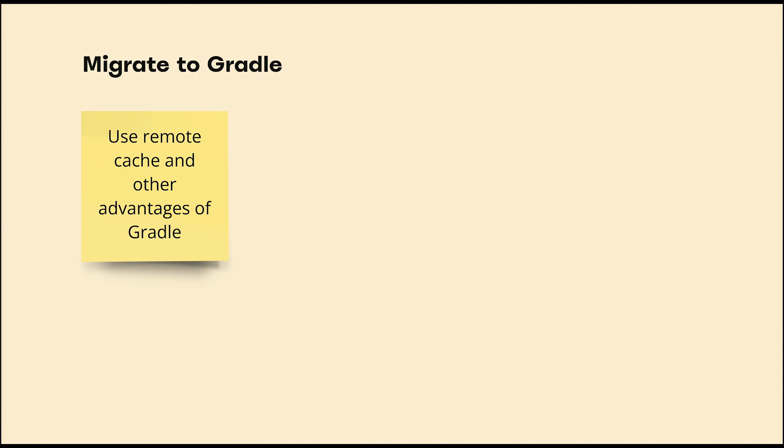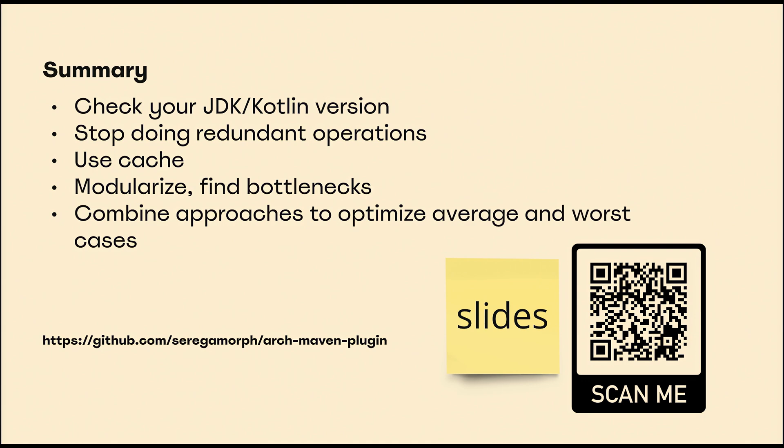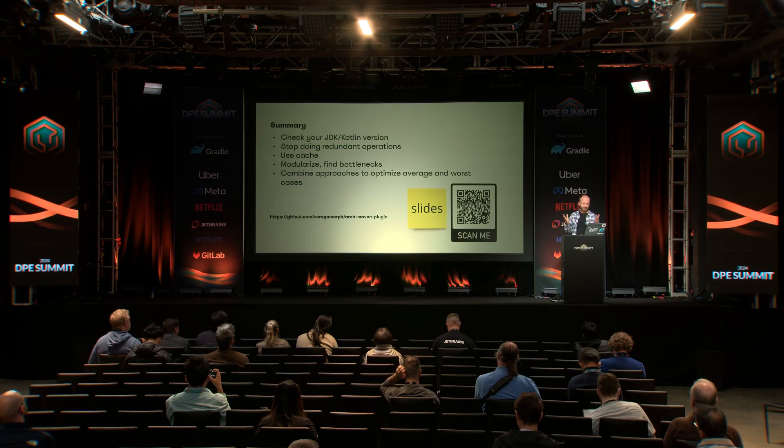By default, engineers can execute a plain command like mvn clean install -DskipTests and their builds will be fast. Finally, it could make sense to migrate to Gradle to use all its advantages, but keep in mind it's not only work for your developer productivity team — you need to do it atomically, covering pipelines and release cycles, and teach your engineers to use new tooling. In many cases it could make sense to stay with Maven. In summary: check your JDK and versions, stop doing redundant operations, use caching, and modularize. Maven is not that bad — it deserves attention and you can make your builds great again.